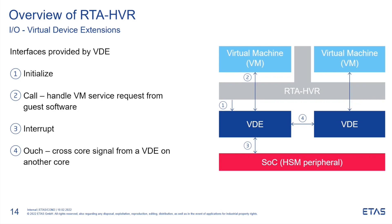And the fourth one is the poke-ouch interface — it's a cross-core signal from VDEs running on different cores. For example, if we're looking at the virtual communication that VDEs are providing, when a virtual machine running on core zero sends a virtual CAN message, in order to reach the virtual machine running on core one, one VDE will need to send a signal to the other VDE to say that data is being transferred across.